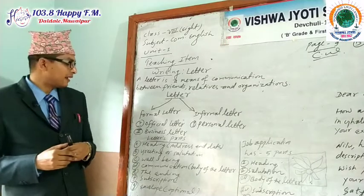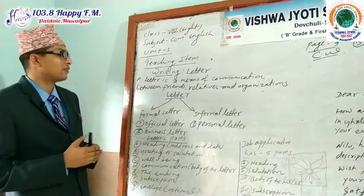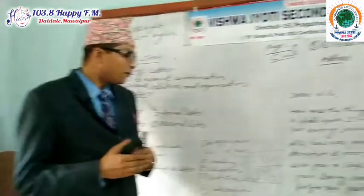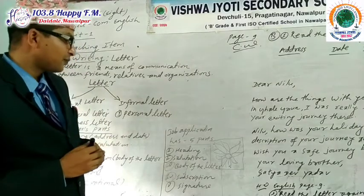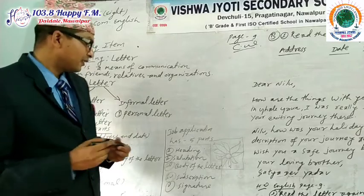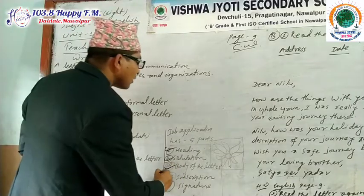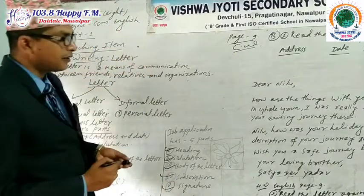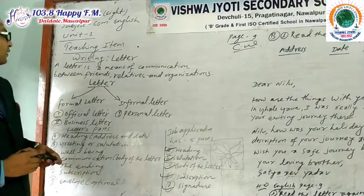After the subscription comes the authorized signature, and optionally a postscript. A job application has five parts: heading, salutation, body of the letter, subscription — also called closing — and signature. Once again, a letter is a means of communication between friends, relatives, and organizations.